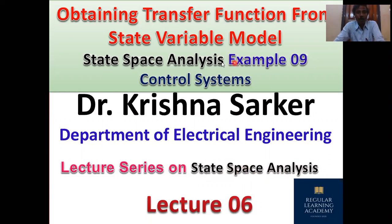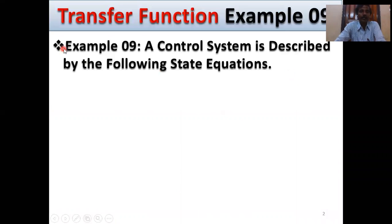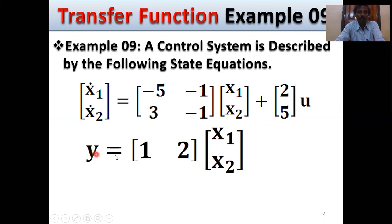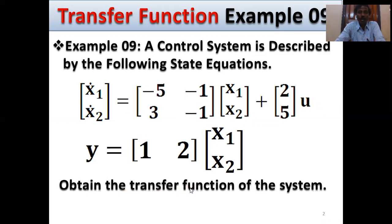Our topic is obtaining transfer function from state variable model, Example 9. A control system is described by the following state equations: x1-dot, x2-dot = [-5, -1; 3, -1] [x1; x2] + [2; 5] u(t). This is the state equation, and the output y = [1, 2] [x1; x2]. We need to obtain the transfer function of the system.